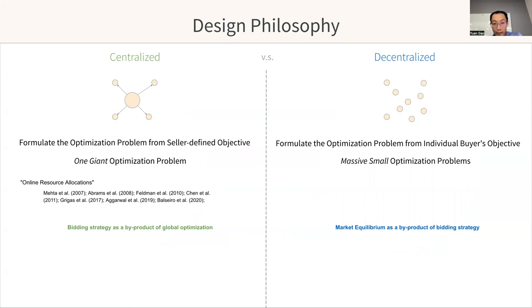In a centralized design, we formulate our optimization problem from the seller's perspective. For example, the goal can simply be trying to maximize the total revenue of the platform, or more generally, we can pre-define utilities or values for the three-sided marketplace involving platform utilities, which is usually revenue, and member utilities, and advertiser utilities.